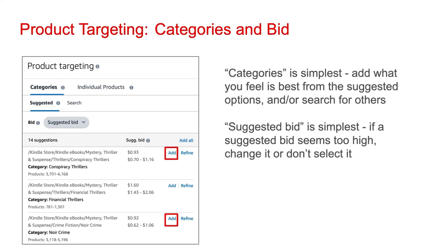Bidding refers to the cost you're going to pay if an Amazon customer clicks on your ad. Amazon will automatically suggest bids based on how competitive your targeted categories are. Going with the suggested bid is simplest. However, sometimes a suggested bid might seem too high for your budget — if so, you can lower the bid. If the bid for a category seems way too high, you can simply remove it. In general, the cost per click on Amazon tends to be higher than on other platforms because people viewing these ads are in a buying mindset.